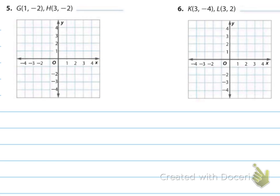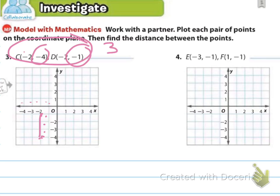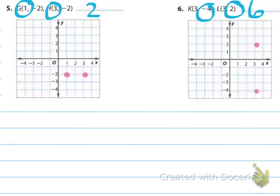Pause the video and do problems four, five, and six on your own. For number four, I plotted the dots on the coordinate plane and found the distance between negative three and the y-axis plus positive one and the y-axis, adding those two amounts together to get four units. For five and six: in one you subtracted because the points are in the same quadrant, and in the other you added because they're in two separate quadrants, accounting for each portion of space.